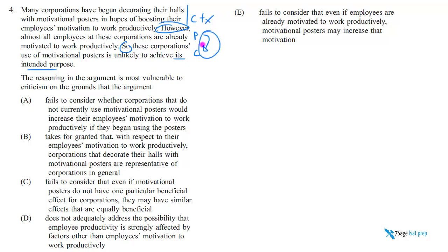Do you see already why this argument is bad? This premise doesn't support this conclusion because it fails to make a distinction between relative and absolute. In an absolute sense, these employees are motivated, sure. But in a relative sense, can people who are already motivated be motivated even more? Of course — like, you're running at five miles an hour, can you run faster? Yeah, probably. So just because they're already motivated doesn't mean you can't boost their motivation.